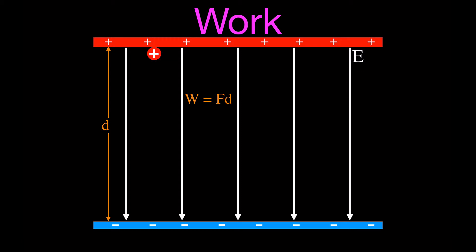We want to calculate how much work we do. Typically in these problems, you don't get force and distance directly. You get the distance, information about the electric field strength, and the charge. The electric field strength is equal to the Newtons of force per coulomb of charge. Solving for force, we get F = QE. Substituting that in, the work is equal to charge times electric field strength times distance. Don't forget the distance must be in meters — it's often given in millimeters or centimeters.